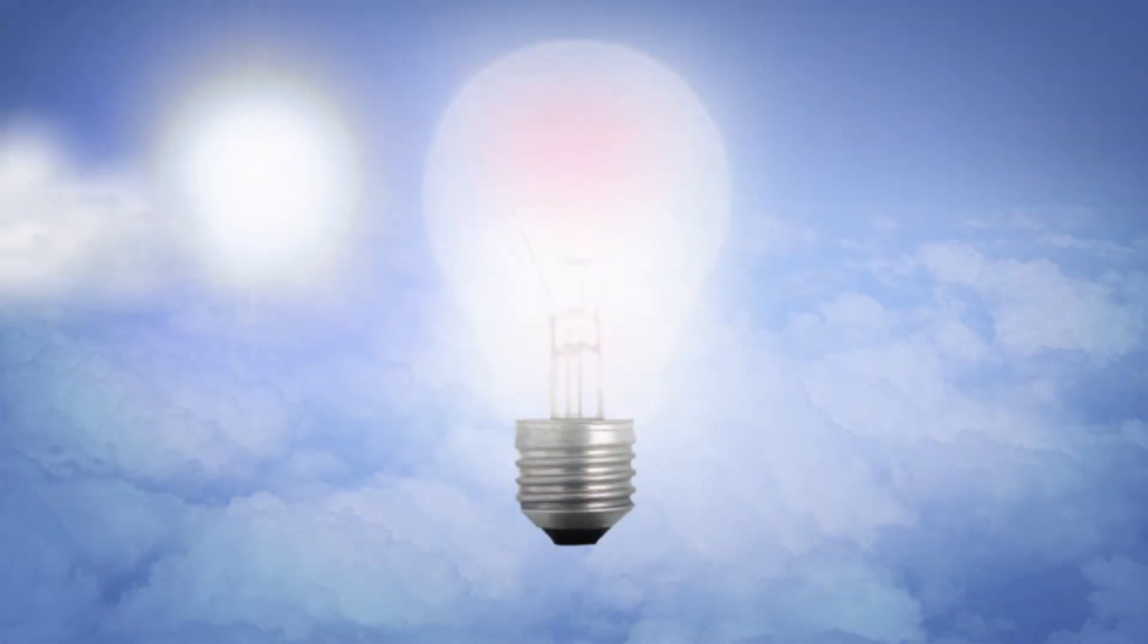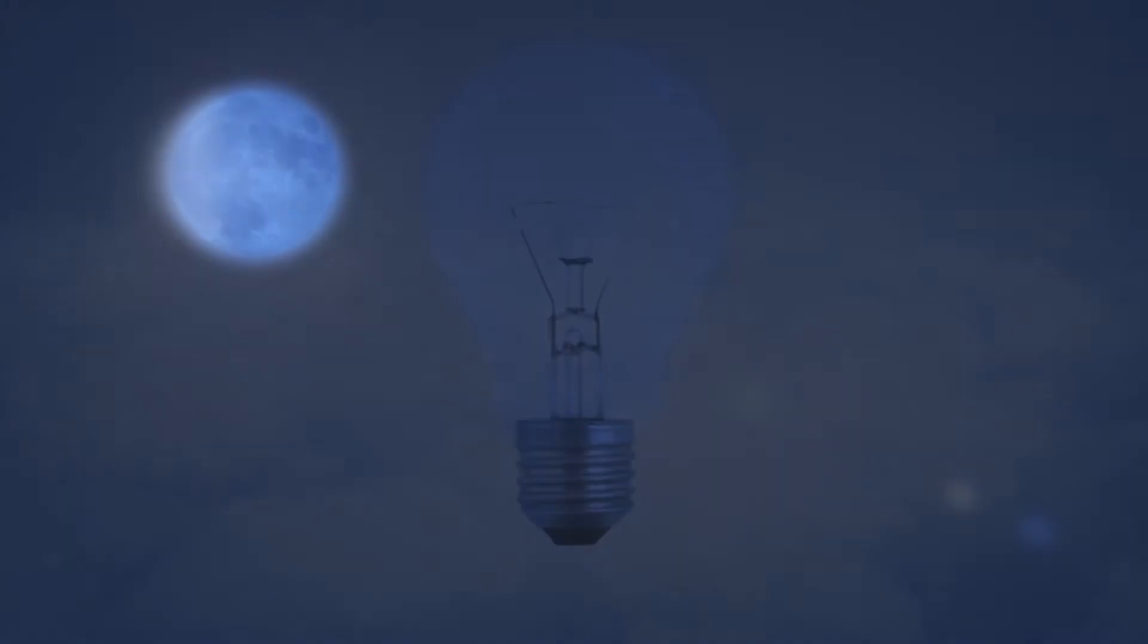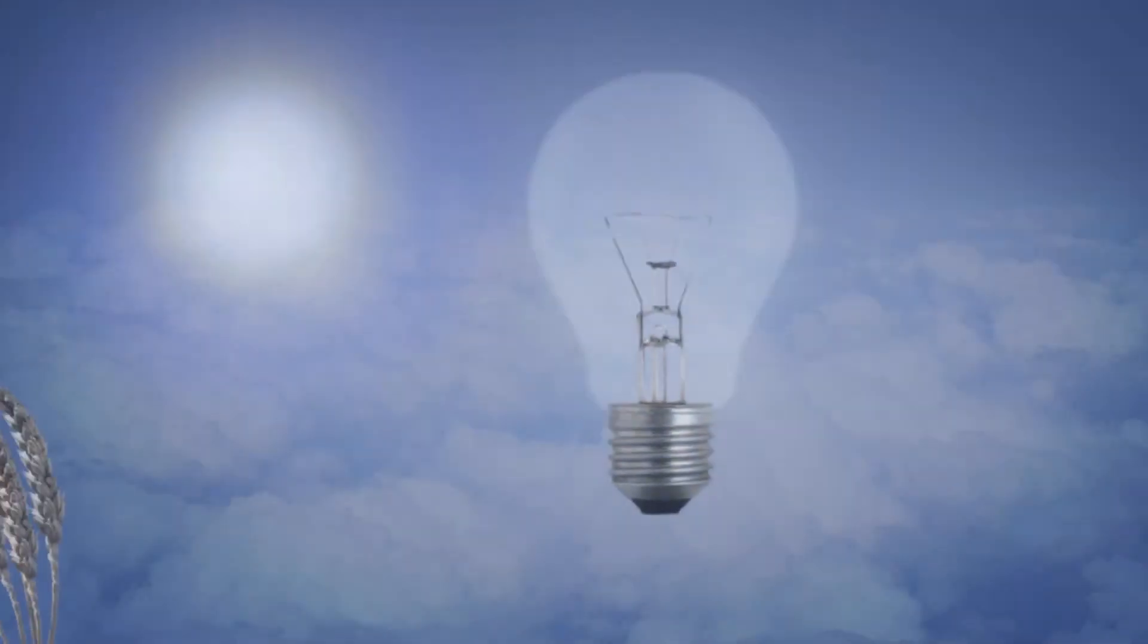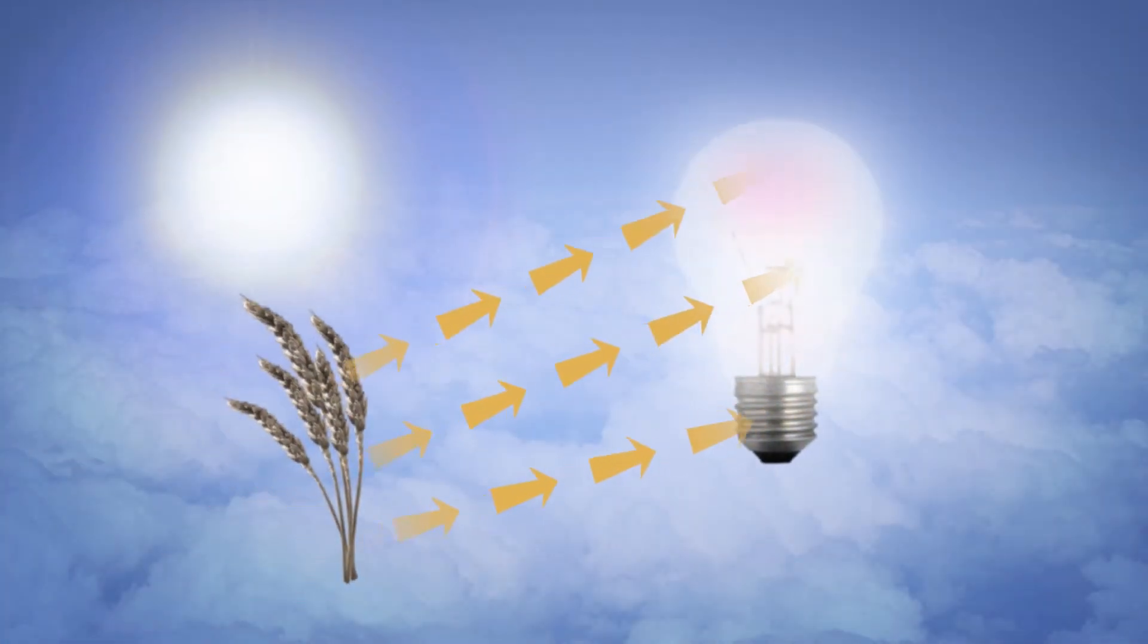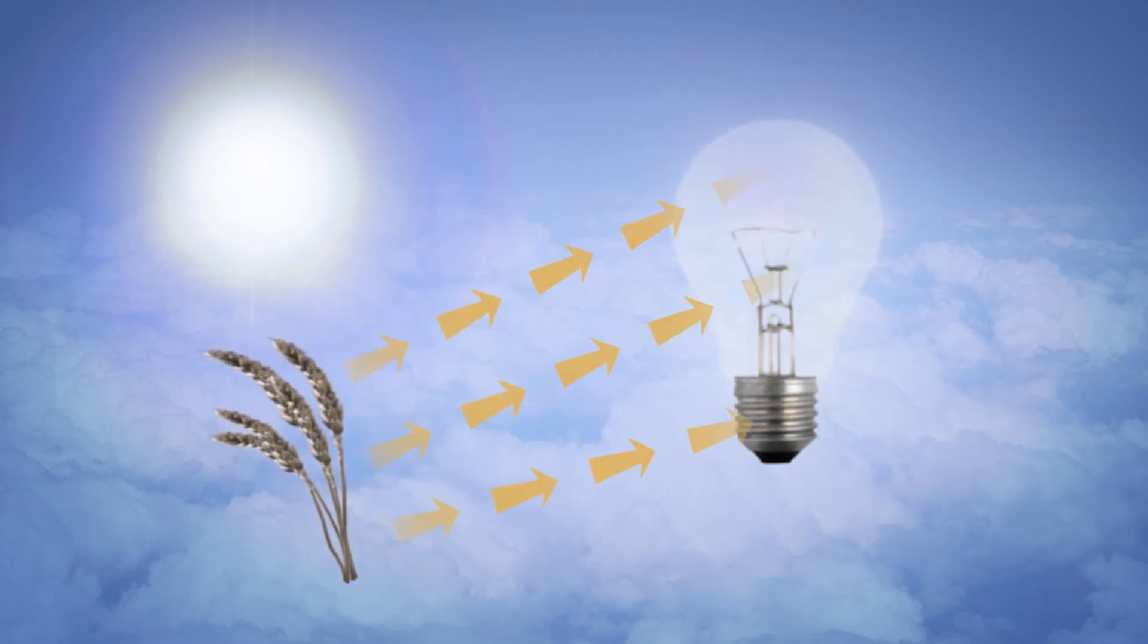Keeping the lights on when the sun isn't shining means finding energy sources which can supplement solar generation. Biofuel production close to solar installations could be an answer, but that means producing higher yields than are currently possible in dry climates and marginal lands.